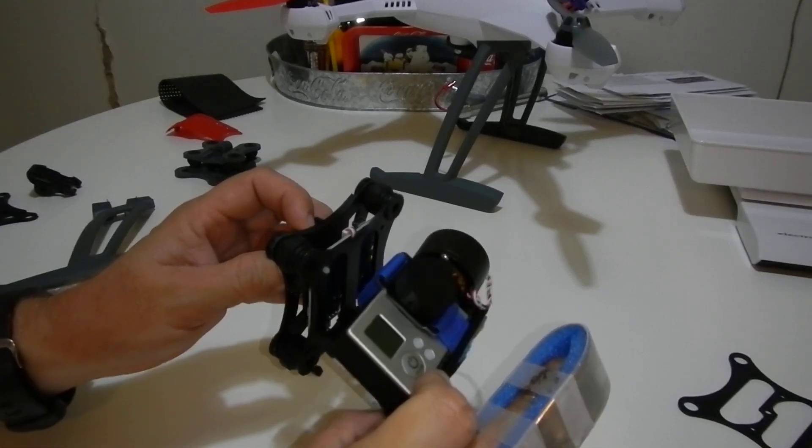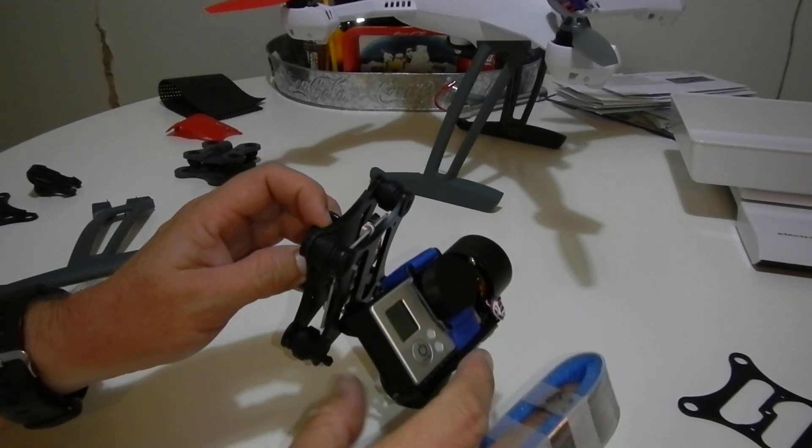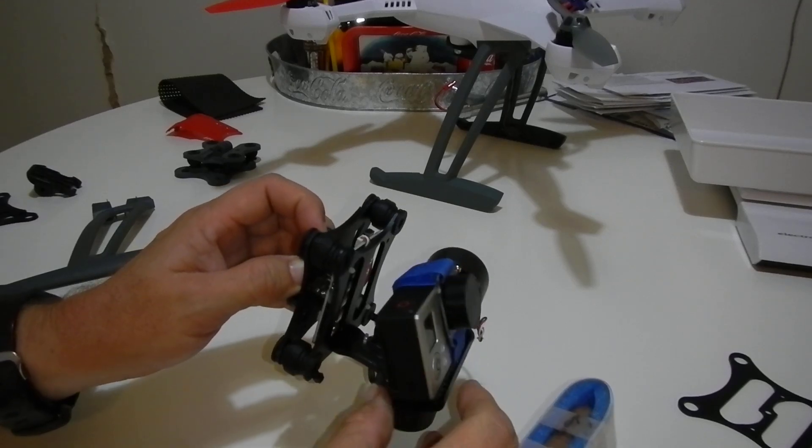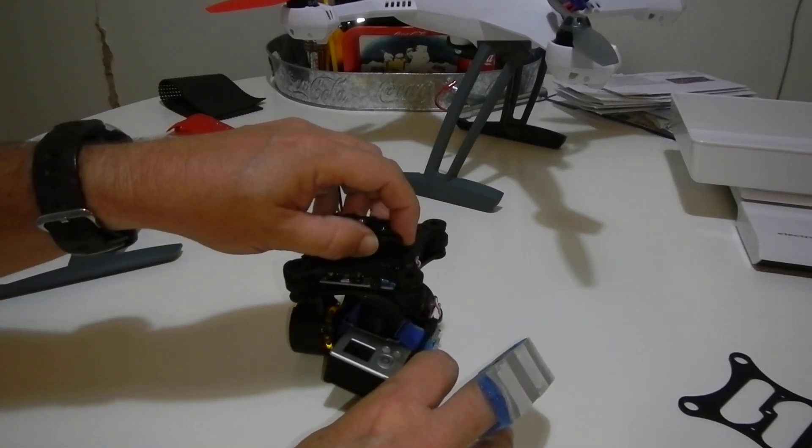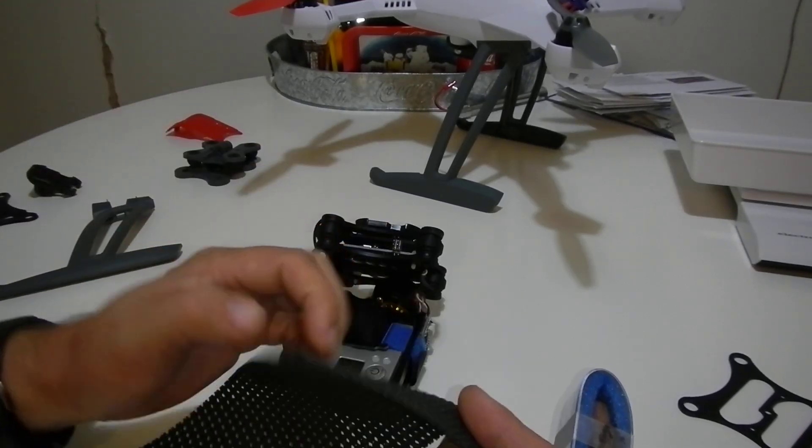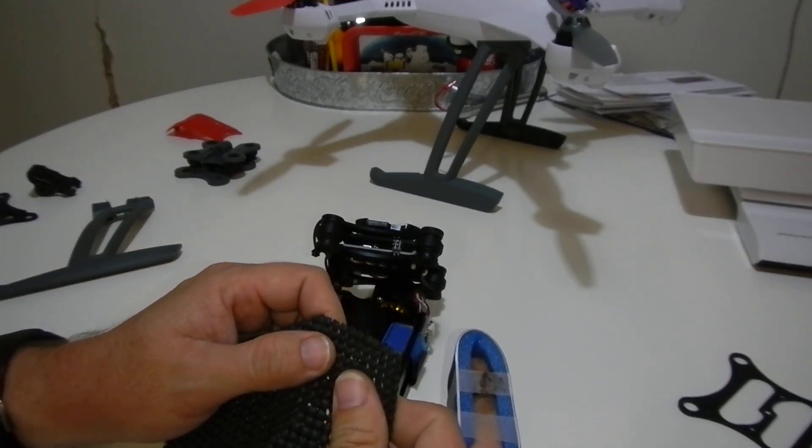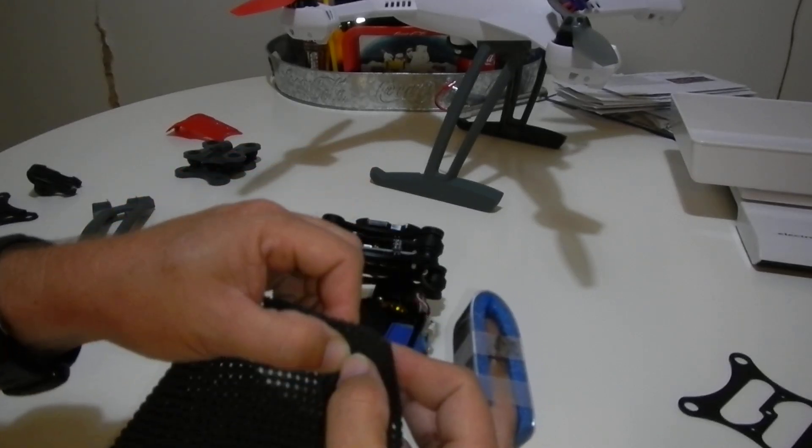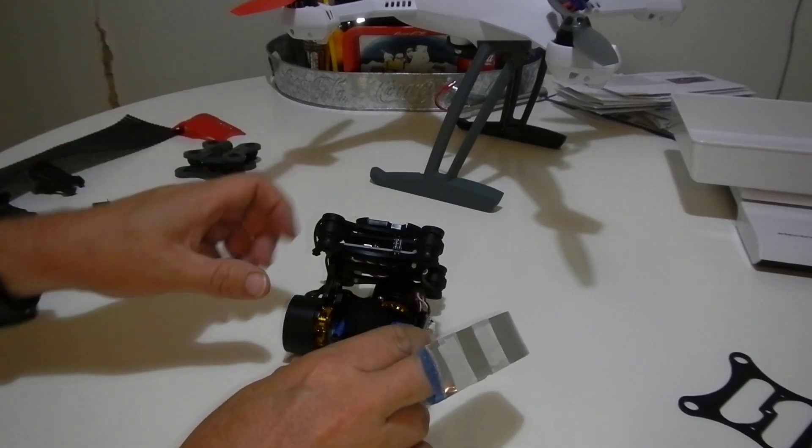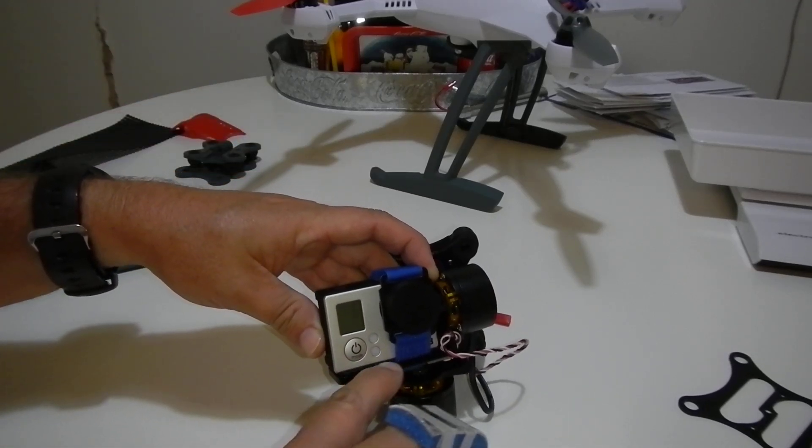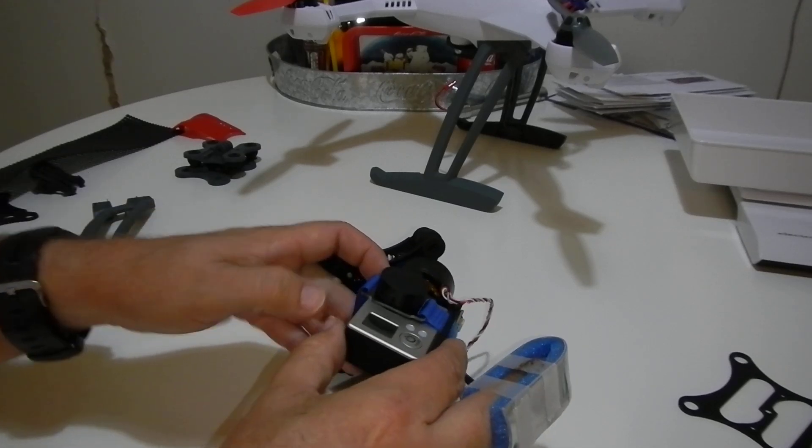Another thing is this GoPro is just held by this Velcro strap. It's just sitting on this metal plate and it can twist around. I didn't really like that. So what I did is I had some leftover toolbox anti-slip matting. I just cut out a little strip of that and laid it underneath here under the GoPro so it stays in there better.